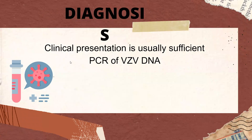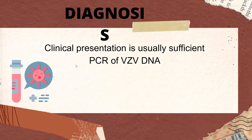For diagnosis, clinical presentation is usually sufficient. However, we can do PCR of varicella zoster virus DNA, obtaining fluid from the vesicles. There is also antibody testing — you can do IgG or IgM antibodies.